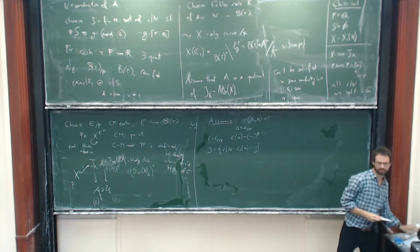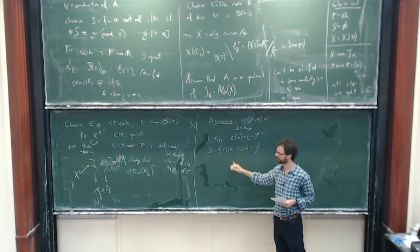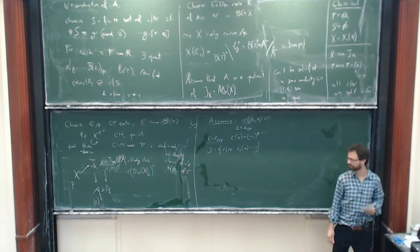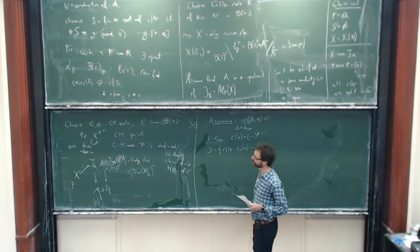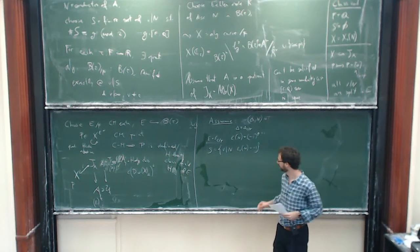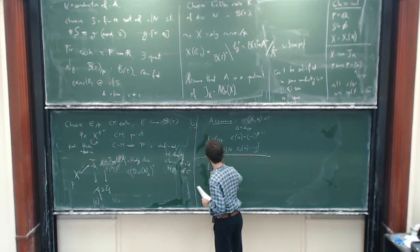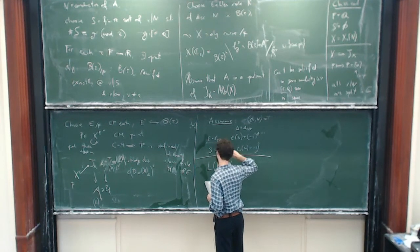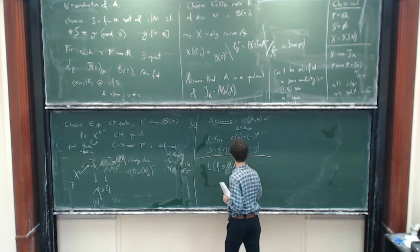Under this condition, we can relate the height of this Heegner point to a derivative of an L-series. The L-series will be the Rankin-Selberg L-series, which appeared in the previous talk as well. I'm going to consider L(F tensor Theta_chi, s), where Theta_chi is a form of weight 1, so F has weight 2 and Theta has weight 1, meaning the center is at s equals 1.